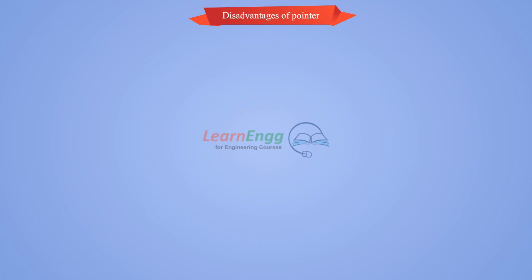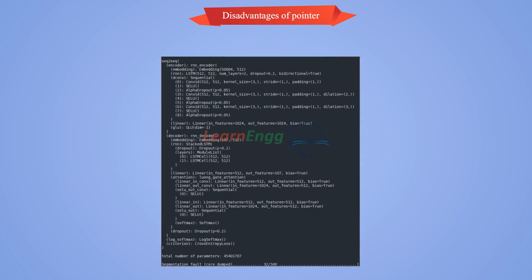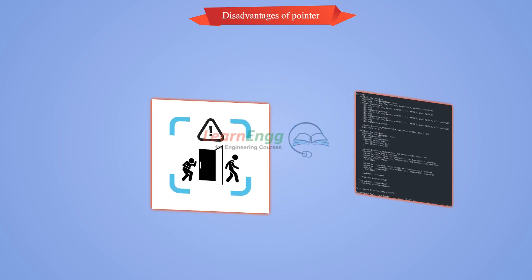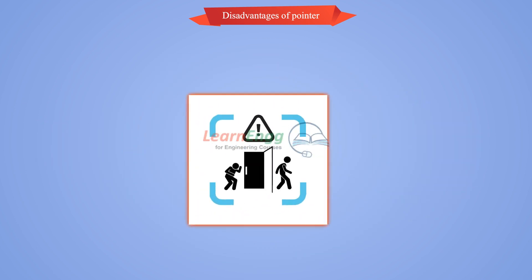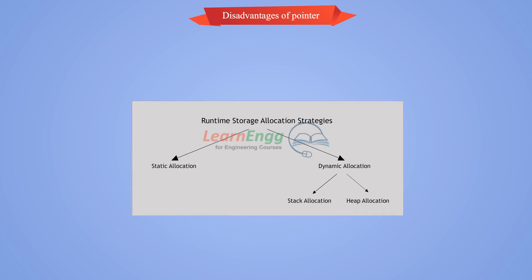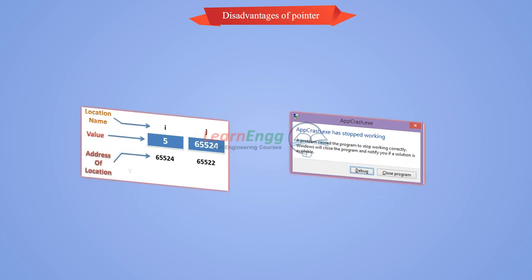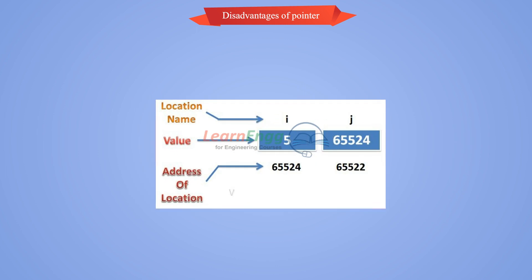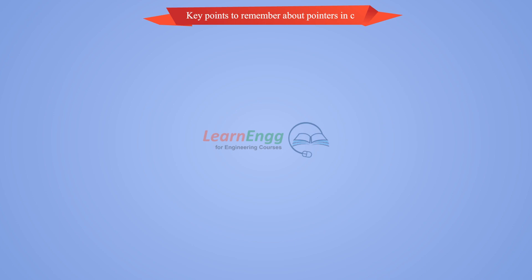Disadvantages of pointer: Uninitialized pointers might cause segmentation fault. We can access the restricted memory area. If sufficient memory is not available during runtime for the storage of pointers, the program may crash. Pointers are slower than normal variables.